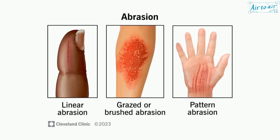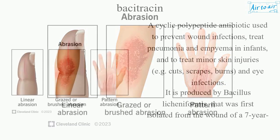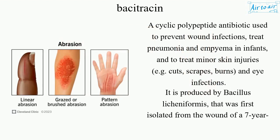Bacitracin is a cyclic polypeptide antibiotic used to prevent wound infections, treat pneumonia and empyema in infants, and to treat minor skin injuries.